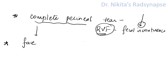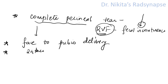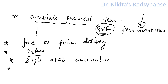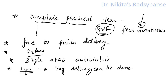Complete perineal tear is more common when there is face-to-pubis delivery. Regarding repair: if recognized immediately during delivery, it can be done within 24 hours; otherwise, we wait for inflammation to subside. A single shot of antibiotic is required during repair according to RCOG guidelines. After complete perineal tear, the woman should ideally wait at least one year before the next pregnancy — and even vaginal delivery can still be done in the next pregnancy.